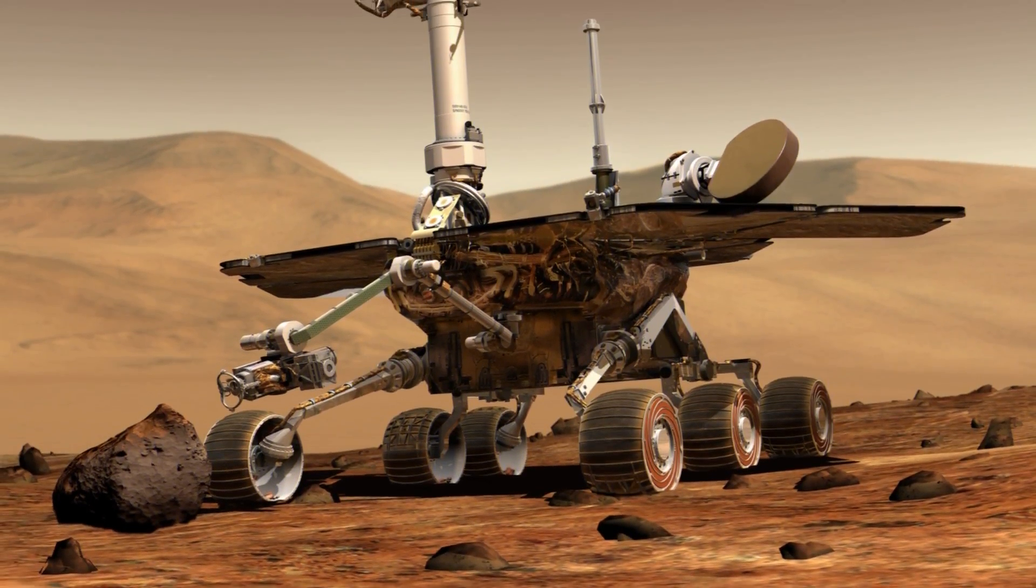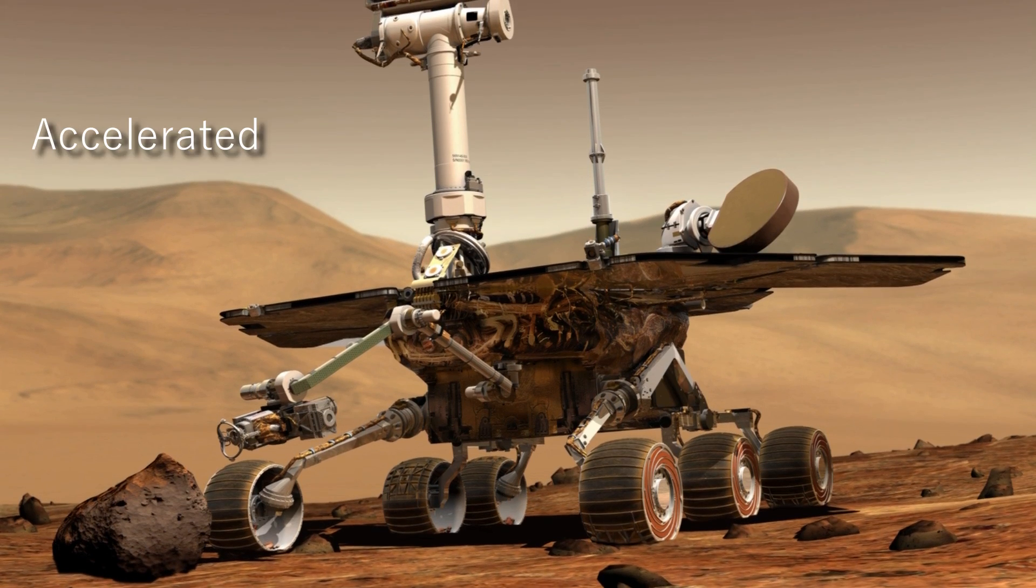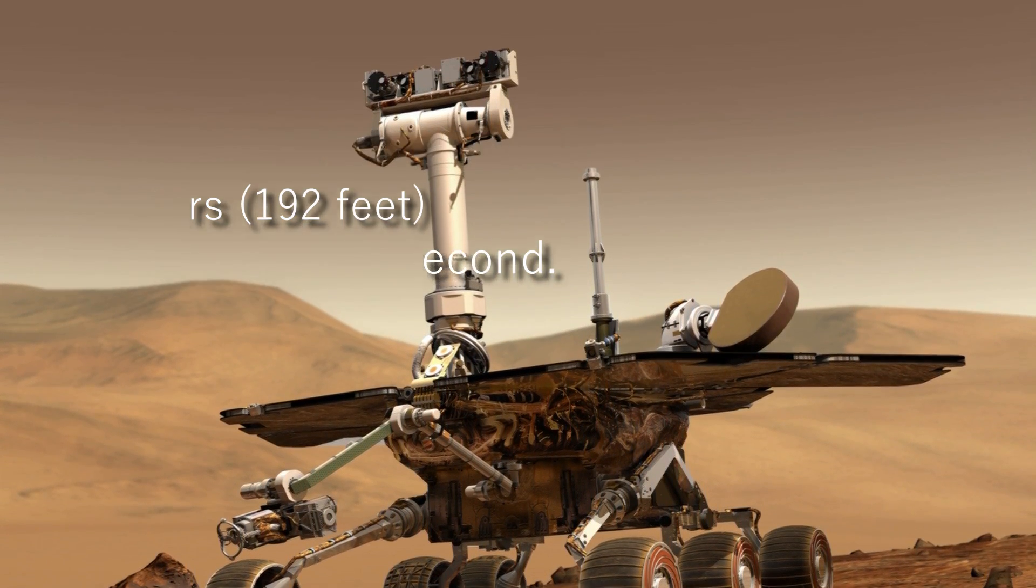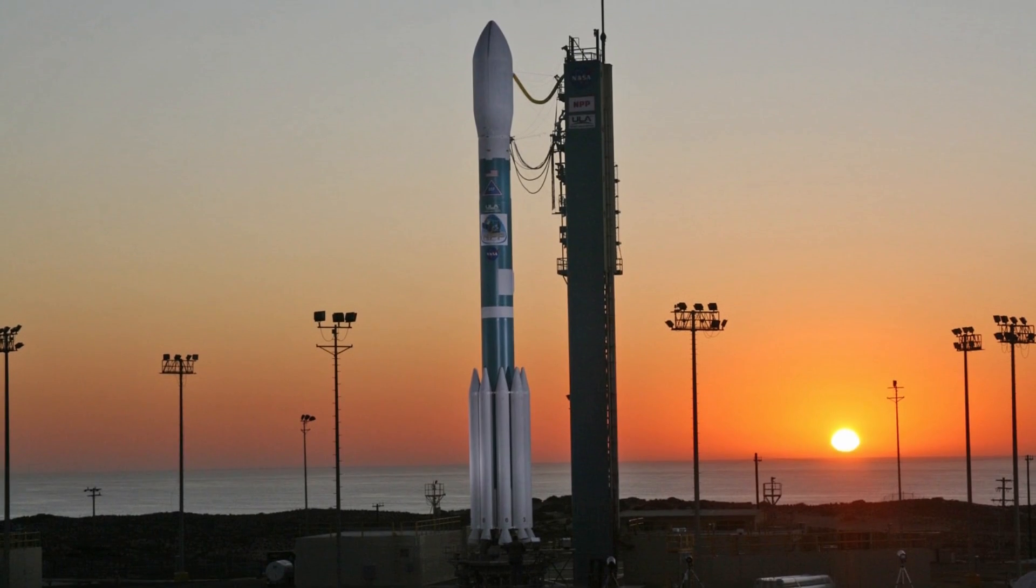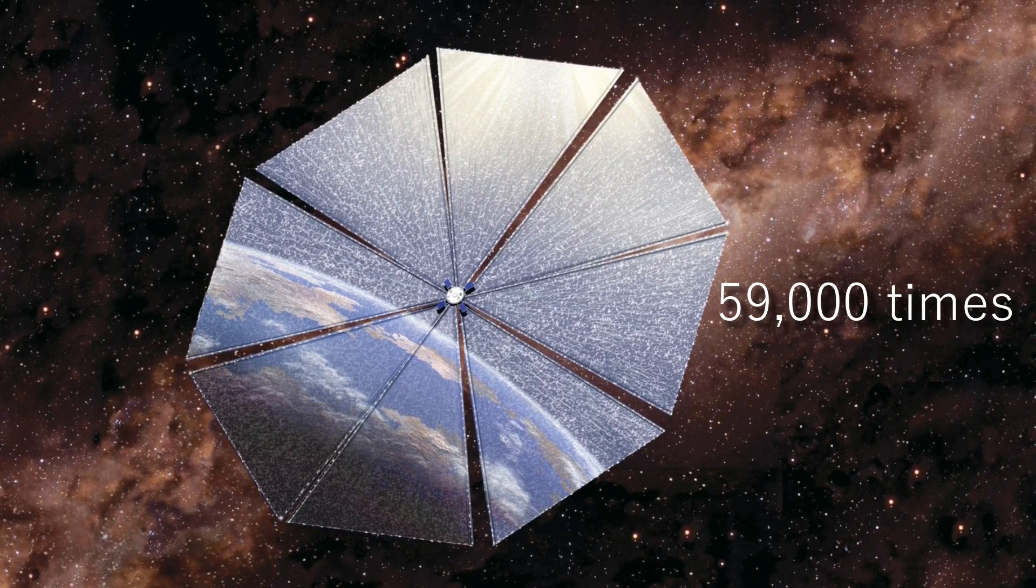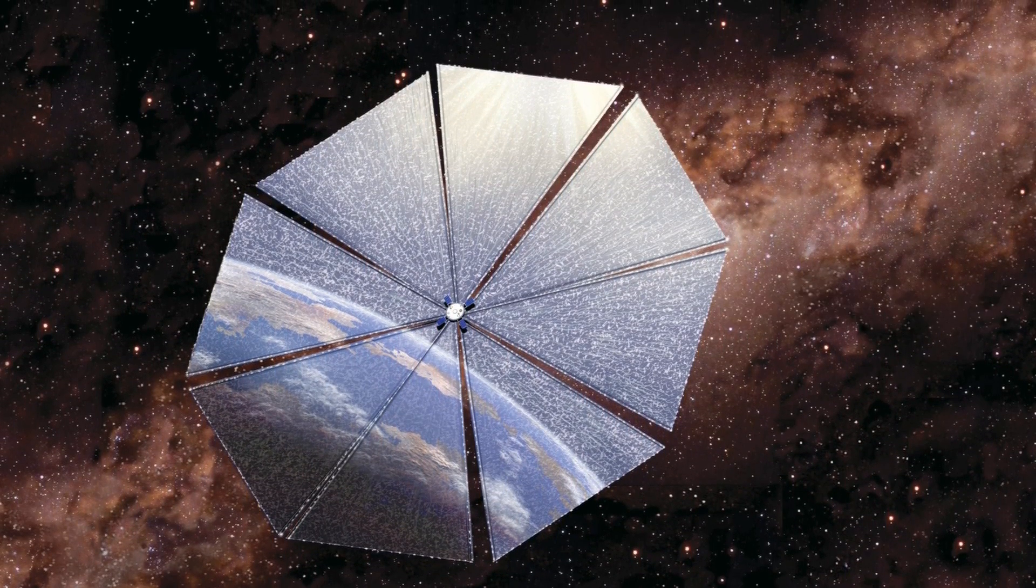The Mars exploration rovers, by comparison, accelerated by as much as 59 meters per second every second during their launch by conventional Delta II rockets. This acceleration is 59,000 times greater than that of a solar sail.